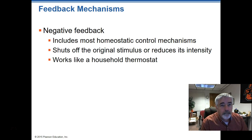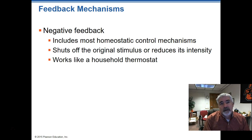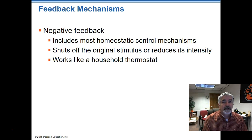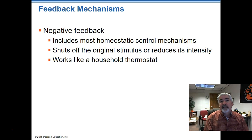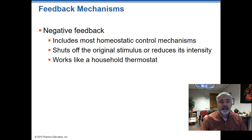One of the homeostatic control mechanisms is called negative feedback. Think of it much like your thermostat at home — you set it to 70 degrees, it's 68 so the heater kicks on, warms up to 70, and then shuts off. The heater won't come back on until it reaches the cool set point of 68 again. Very much like a thermostat is how negative feedback works.